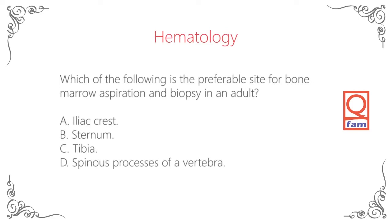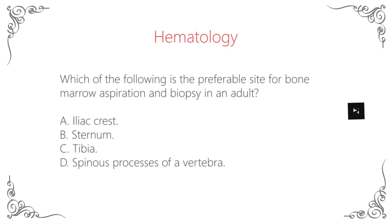Which of the following is the preferable site for bone marrow aspiration and biopsy in an adult? A. Iliac crest. B. Sternum. C. Tibia. D. Spinous processes of a vertebra. The answer is A — Iliac crest.